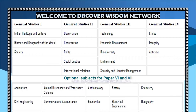GS Paper 3 covers science and technology, economic development, biodiversity, environment, security, and disaster management. GS Paper 4 covers ethics, integrity, and aptitude. It is very important that you fix this syllabus in your mind, because once you know the syllabus, when you read a newspaper article — whether it relates to history or current affairs — you will understand which syllabus area it belongs to.